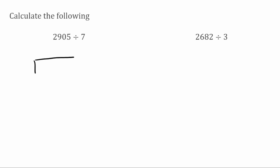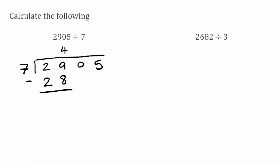For this first question, we have 2,905 divided by 7. So we want to see how many times does 7 fit into 2. Well, it doesn't, so we're going to bring in the next digit. 7s into 29 will go 4 times because 7 times 4 is 28. So now we want to take that away from the 29. 29 take away 28 leaves us with 1. Now we're going to bring down the next digit. So bringing down the 0, I've now got 10. 7s into 10 will go once because 7 times 1 is 7. Taking them away, 10 take away 7 leaves us with 3.